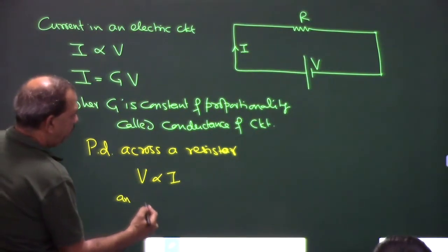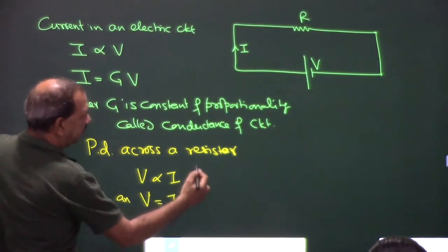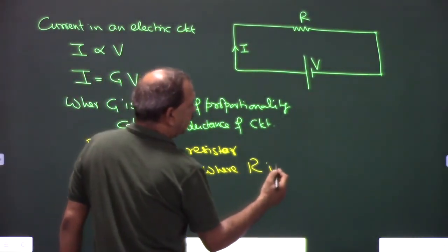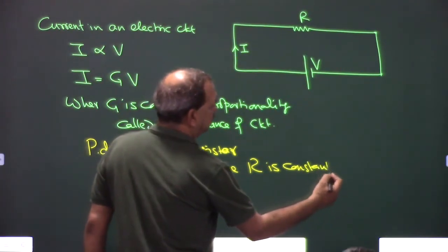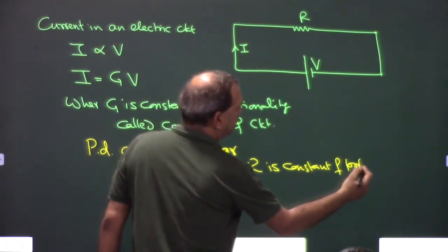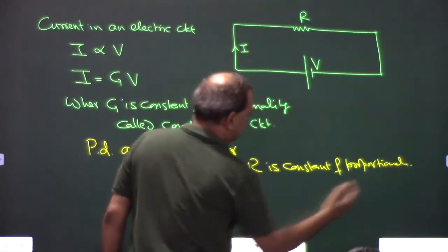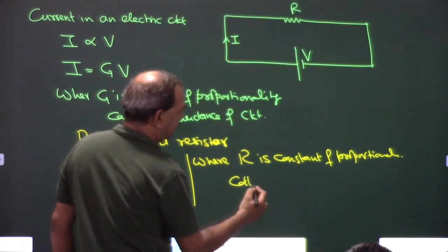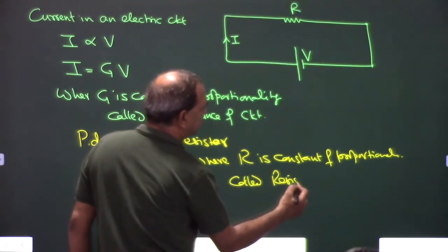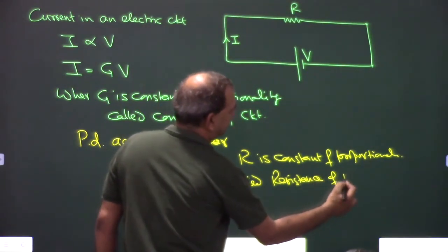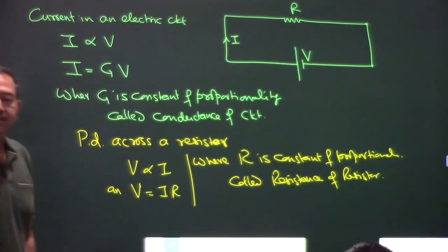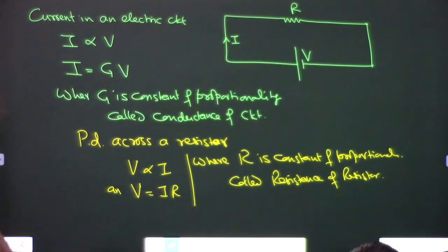From Ohm's law, V = IR, so R = V/I. This is called the definition of resistance. Whether Ohm's law is valid or not, the definition of resistance is: the ratio of voltage to current. To find resistance of any circuit, apply voltage, measure current, and divide voltage by current.